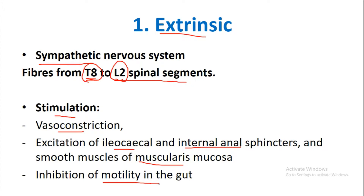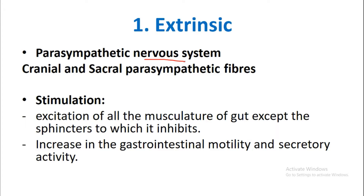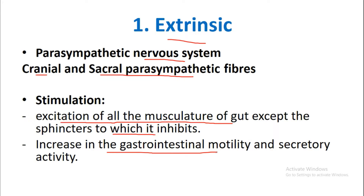Grossly, stimulating the sympathetic nervous system inhibits motility in the gastrointestinal tract. The parasympathetic nervous system, as part of extrinsic nervous control, has two fiber groups: cranial parasympathetic fibers and sacral parasympathetic fibers. Stimulation of both these fibers causes excitation of all gut musculature except sphincters, which it inhibits, and produces an increase in gastrointestinal motility and secretory activity.